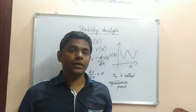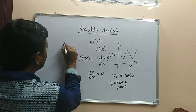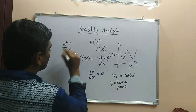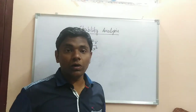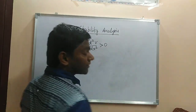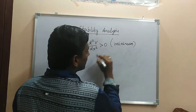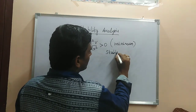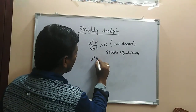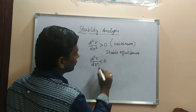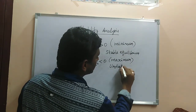Now you have to find the type of equilibrium. For that, you need to evaluate d²V/dx². If d²V/dx² is greater than zero, that is a minimum of the potential energy and the body is in stable equilibrium. On the other hand, if d²V/dx² is less than zero, that is a maximum of the potential energy and the body is in unstable equilibrium.